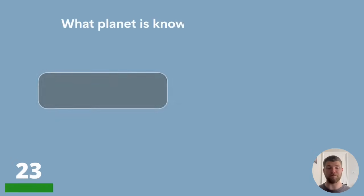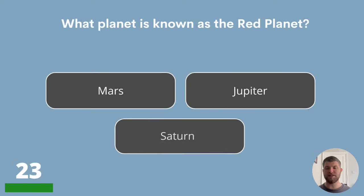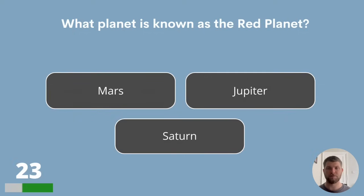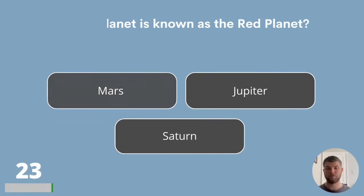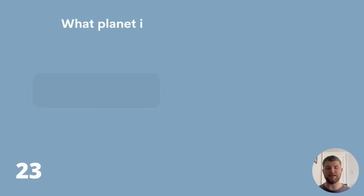Question 23. What planet is known as the Red Planet? Is that Mars, Jupiter or Saturn? The answer is Mars.